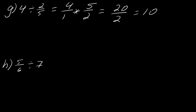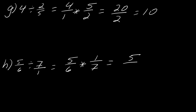For H: this seven is technically over an invisible one, and I always flip the second fraction. So seven over one becomes one over seven. Multiplying straight across gives five over 42.